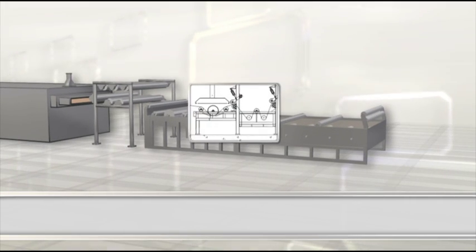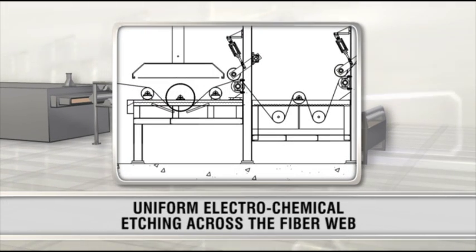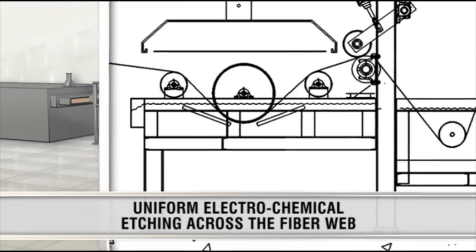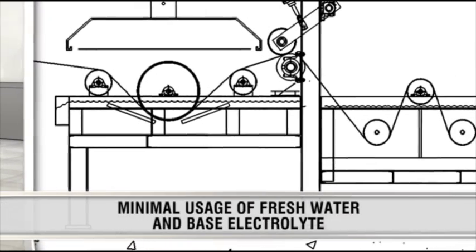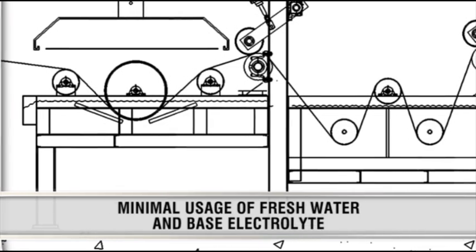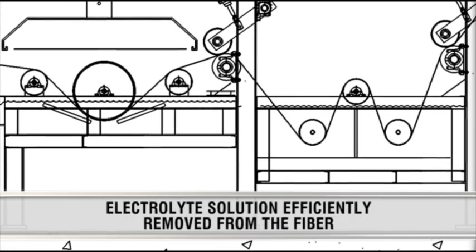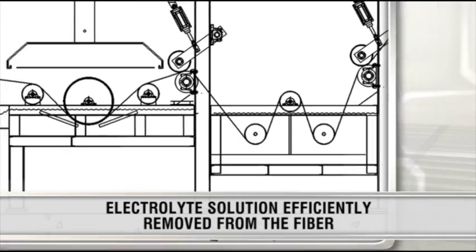The Despatch surface treatment process provides uniform electrochemical etching across the fiber web. A minimum amount of fresh water and base electrolyte is used due to effective recirculation systems, and the electrolyte solution is efficiently removed from the fiber.